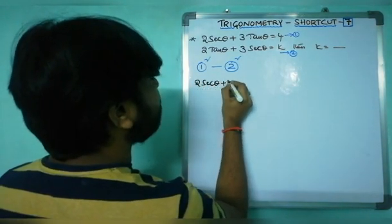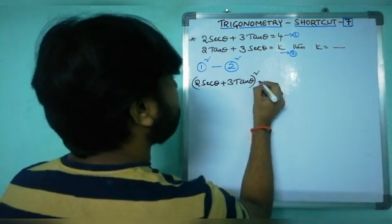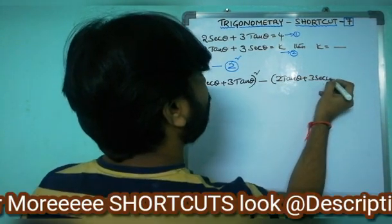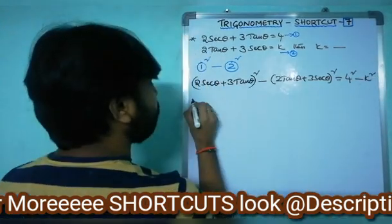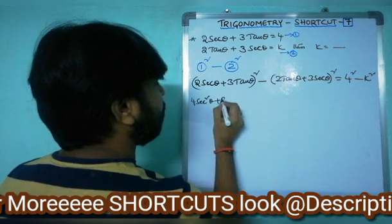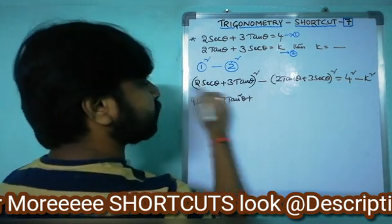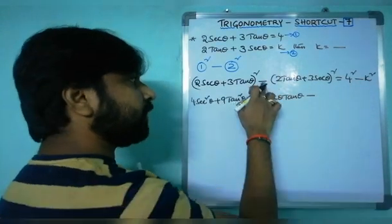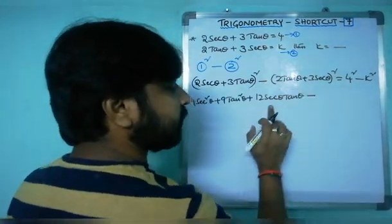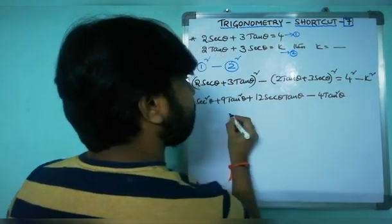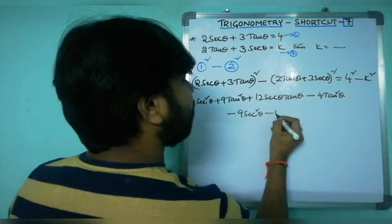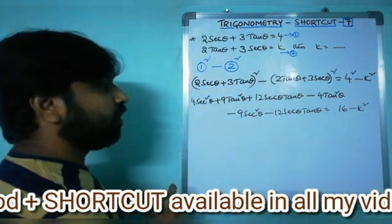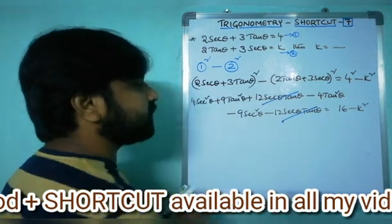Computing 1² − 2²: (2 sec θ + 3 tan θ)² − (2 tan θ + 3 sec θ)² = 4² − k². Expanding the first square: 4 sec²θ + 9 tan²θ + 12 sec θ tan θ. The second square (with the outside negative sign making all terms negative): −4 tan²θ − 9 sec²θ − 12 sec θ tan θ. This equals 16 − k².